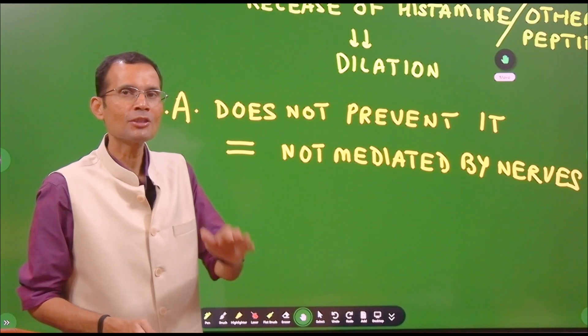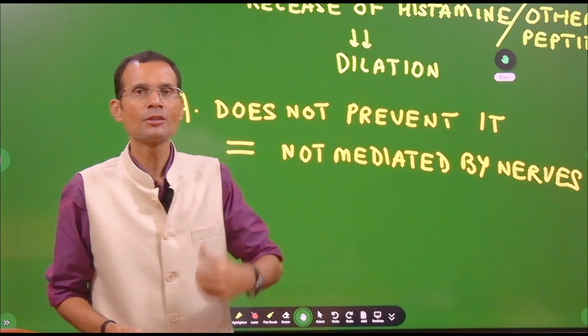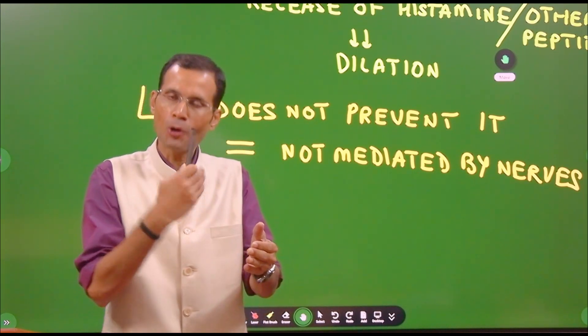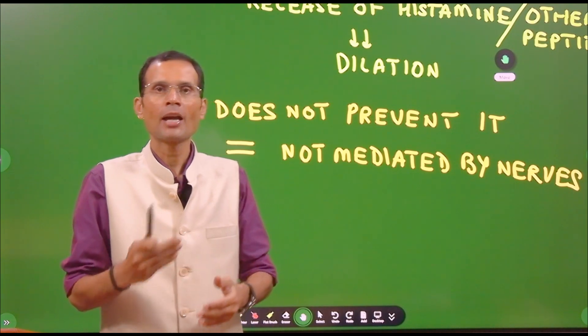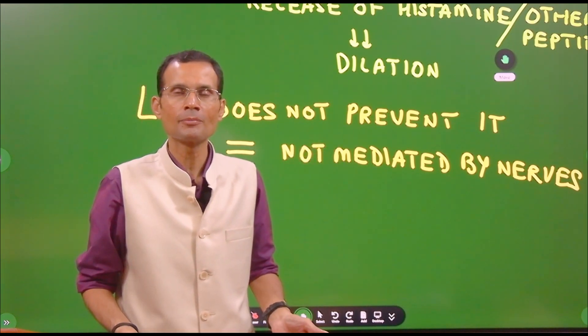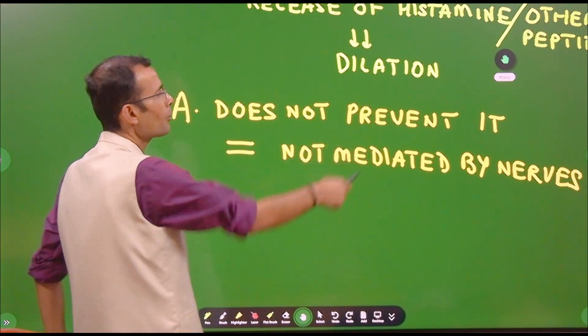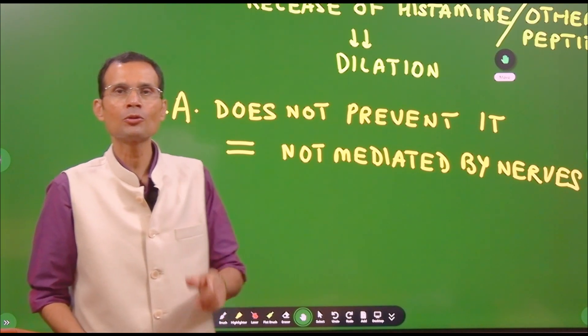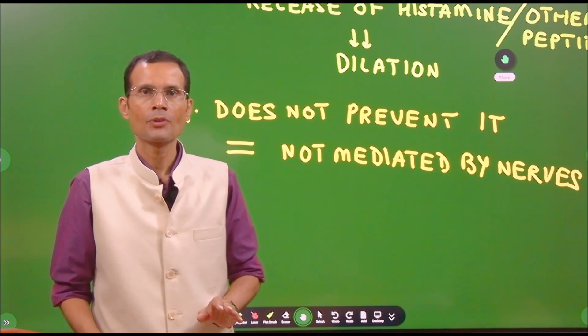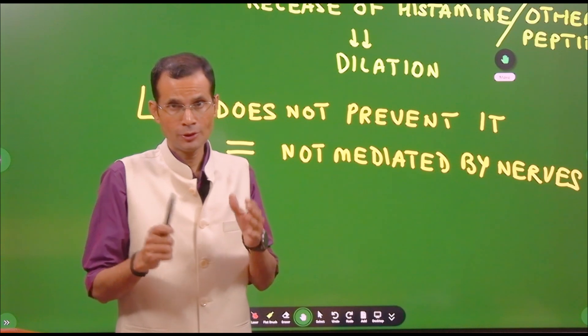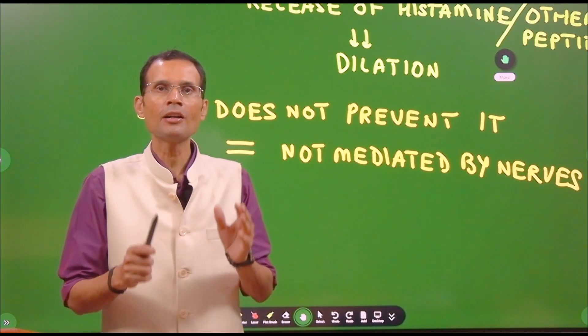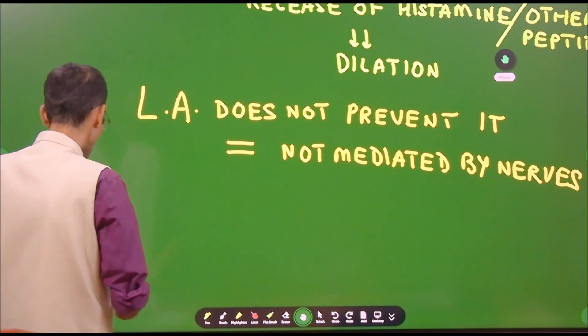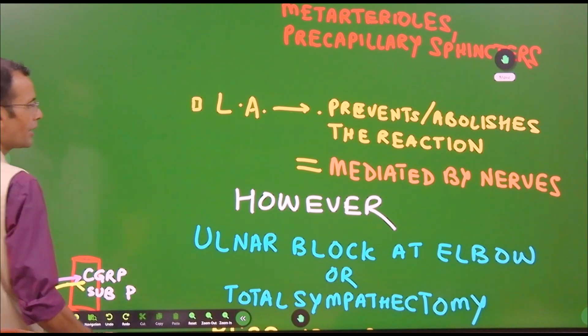You know the anesthetics, particularly the local anesthetics, they block the impulse conduction through the nerves locally. Now, if this reaction was mediated by nerves, then when you apply local anesthetics, the impulse conduction would have blocked and this reaction could not have been seen. But that does not happen. Even if you apply local anesthetic, the reaction still persists. That means this red reaction is not mediated by any nerves.